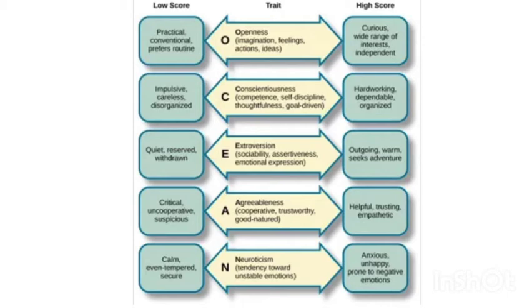Now we'll understand the low and high scores of each trait. A person high in the O factor — that is, high in Openness — will be more curious, have a wide range of interests, and be independent. A person low in the O factor is practical, conventional, and prefers routine.